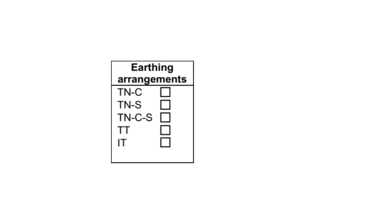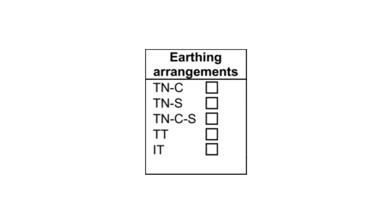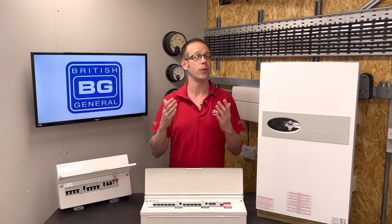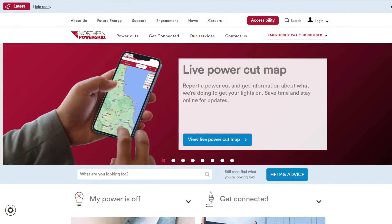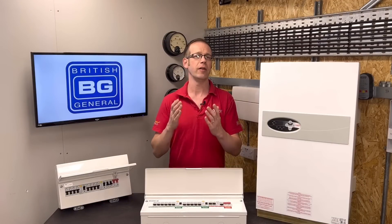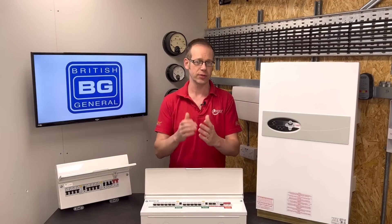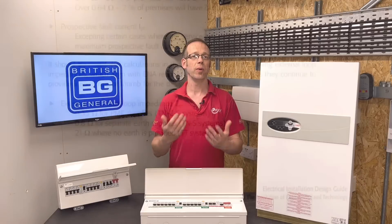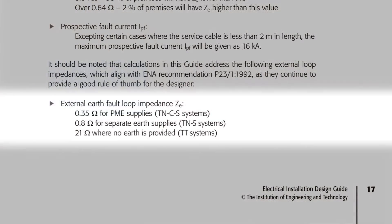We need to think about what type of earthing arrangement we've got. The more common options will be TN-S, TN-C-S, and TT. This is helpful because if we can't measure the external earth fault loop impedance we can find out by inquiry from the DNO. If you're not sure what we mean by earth fault loop impedance, we'll revisit this in more depth when we look at verifying our cable size is acceptable.